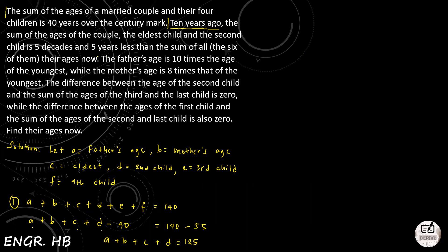The father's age: A = 10F (10 times the age of the youngest, F). This is Equation 3. The mother's age: B = 8F (8 times the age of the youngest). This is Equation 4.